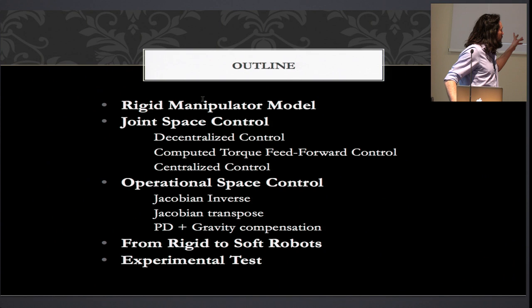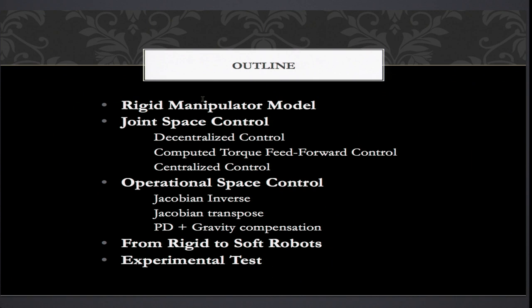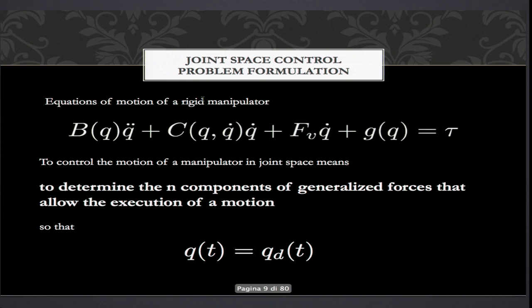So now we will see the rigid manipulator model, then three algorithms for solving the joint space control problem, three approaches for the operational space control problem. After that, we will speak about the model of a soft manipulator and see which hypotheses allow us to use the algorithms that work for rigid manipulators also in the soft robotics context, and then we will do experimental tests.